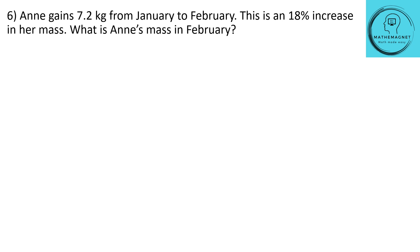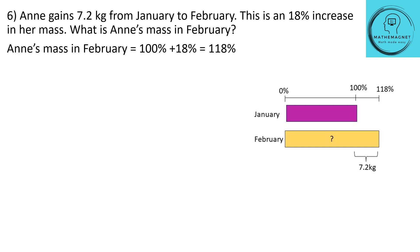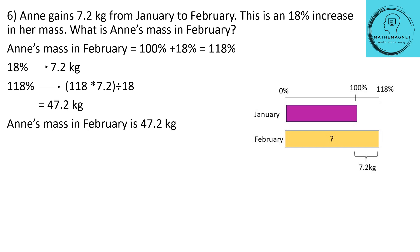Let's draw the bar model. January will be your base value. We don't know how much she weighed in January, but in February she weighed 7.2 kg more than January, and that 7.2 kg is 18%. So in February she weighed 118% because she weighed 18% more. We know the value of 18% is 7.2 kg, so 118% will be 118 × 7.2 ÷ 18, which equals 47.2 kg. So Annie's mass in February was 47.2 kg.